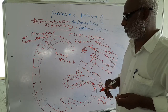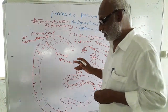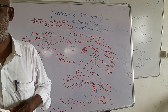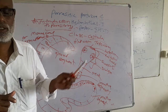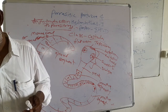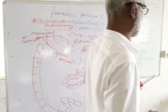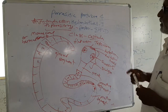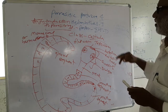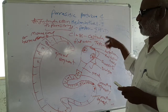Examples: Taenia solium lives in the intestine of pig, and Taenia saginata lives in the intestine of cattle. Parasites means totally dependent on other hosts. Parasitic protozoa — that is the introduction to parasitology.